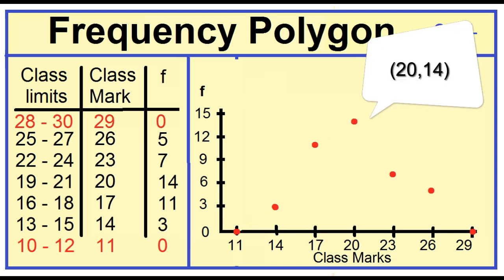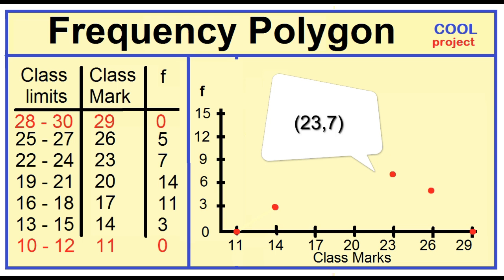20, 14. 23, 7. 26, 5. 29, 0. Step 6: Join the consecutive dots with straight lines.